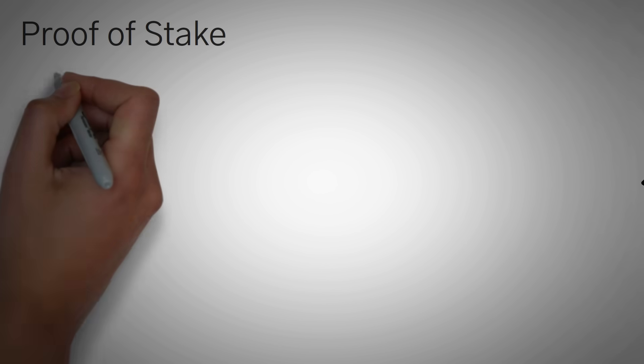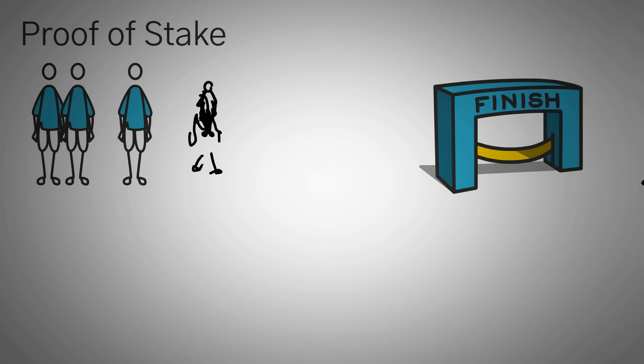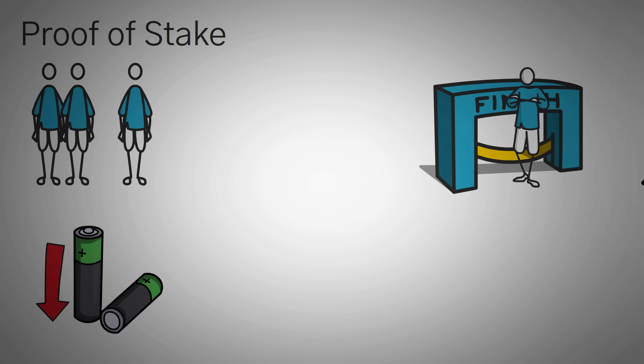And with proof-of-stake, all the runners would line up at the starting line, and then only a single racer would be selected based on a few factors, which we'll talk about here soon. This way, we don't waste electricity or energy.